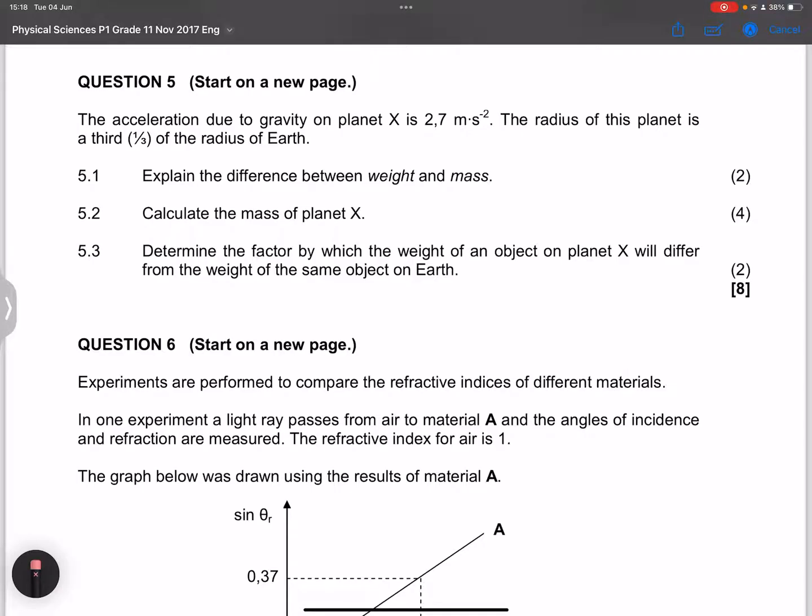So now what I'm going to do is, if we were going to measure the weight of this object on the Earth, we know that it would be mass times gravitational acceleration. So gravitational acceleration is actually G times the mass of the Earth divided by the radius of the Earth squared.